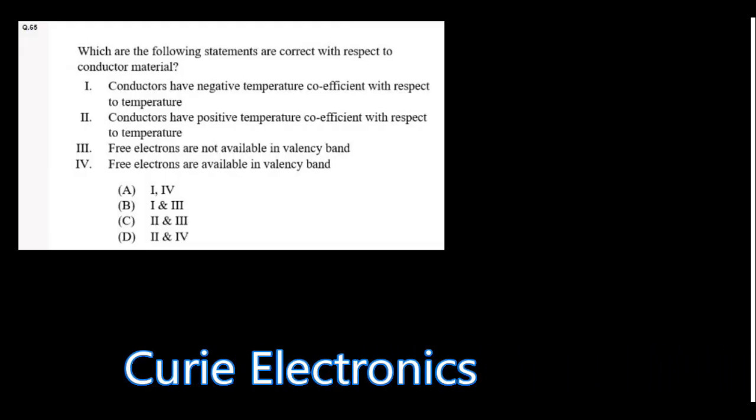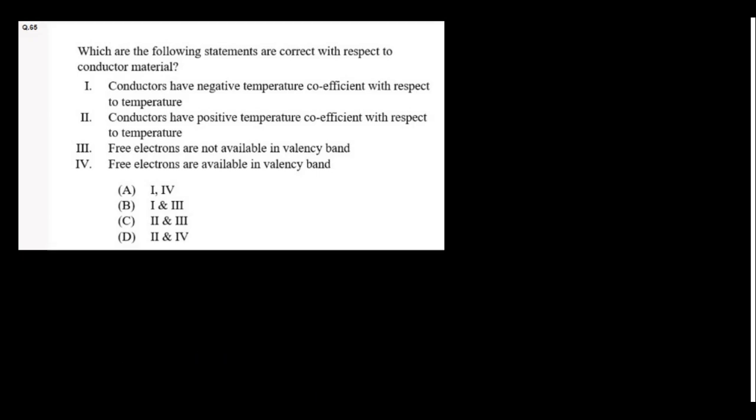Regarding conductor material: a conductor has a positive temperature coefficient, and its valence band and conduction band are overlapped, meaning free electrons are readily available. Options 2 and 4 are correct. Option D is the right answer.